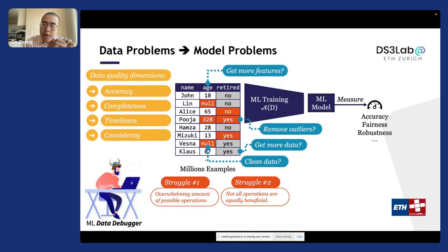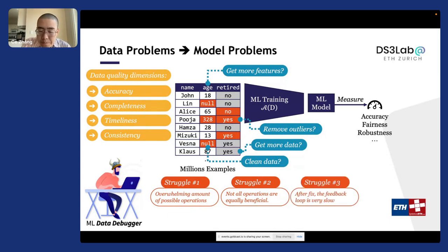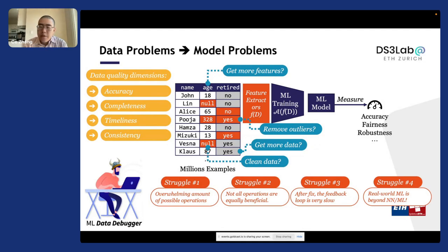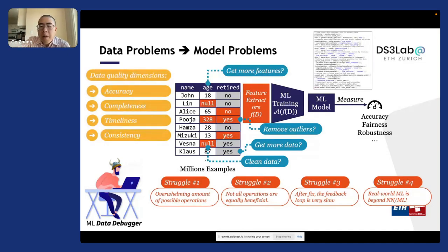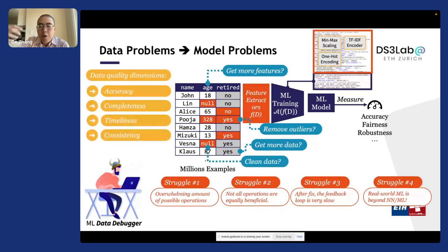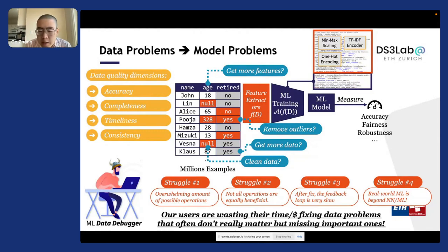The second struggle is that not all those operations are equally beneficial to the final utility — often only a small collection of operations are really crucial and many others are not useful at all. The third struggle is that after you fix something in your dataset, the feedback loop is very slow; you often have to wait for the entire machine learning training process to finish before getting a signal on whether your data operation helped. The last struggle is that real-world machine learning applications are rarely just about a training process — they are complex programs where only small components involve ML training and the majority is data transformation.